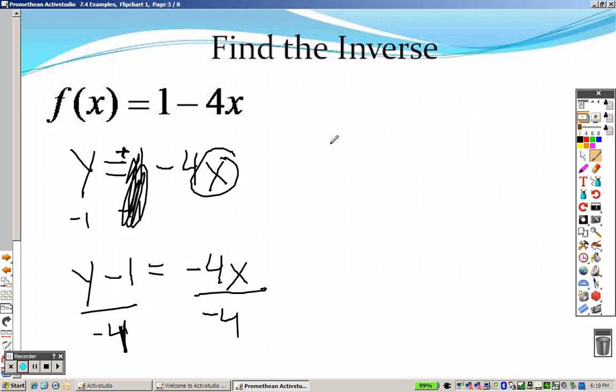By a negative 4. So you end up getting x equals, because that crosses out, y minus 1 over negative 4.